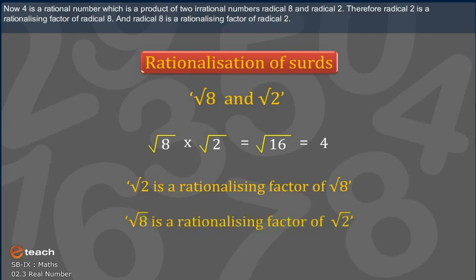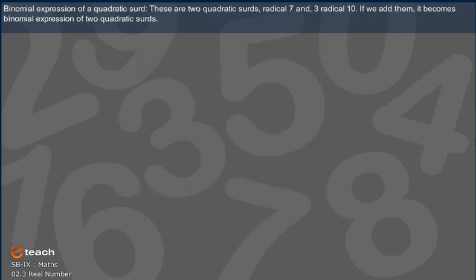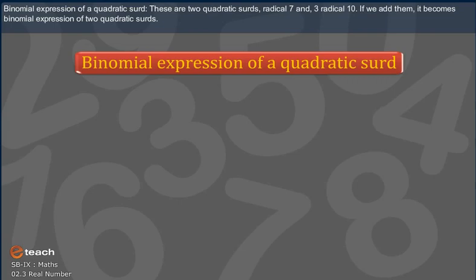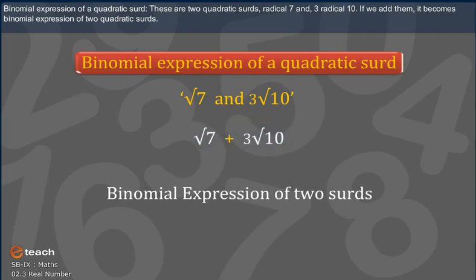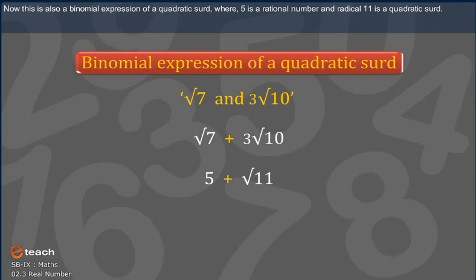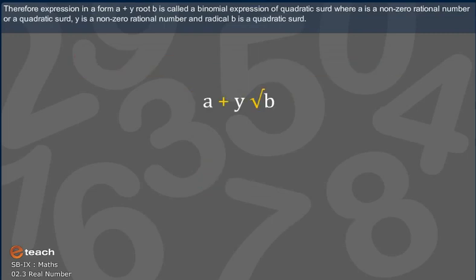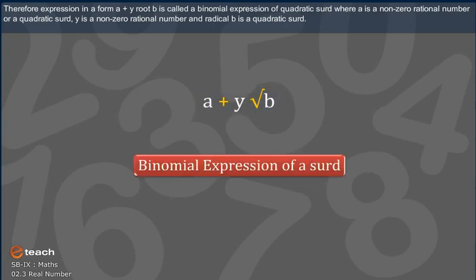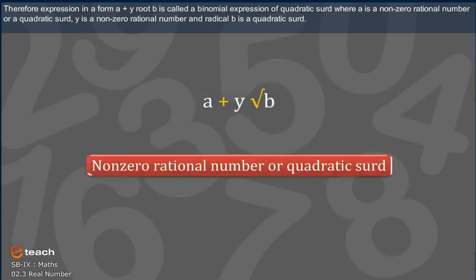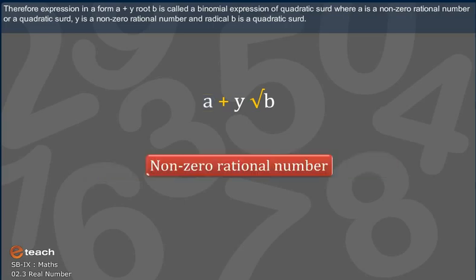Binomial expression of a quadratic surd: root 7 and 3 root 10 are two quadratic surds. If we add them, it becomes a binomial expression of two quadratic surds. This is also a binomial expression of a quadratic surd, where 5 is a rational number and root 11 is a quadratic surd. Therefore, an expression in the form A plus Y root B is called a binomial expression of a quadratic surd, where A is a non-zero rational number and root B is a quadratic surd.